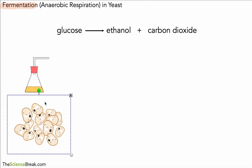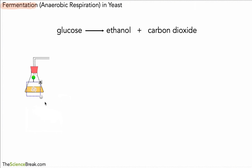So there's our yeast happily respiring away in our container, which is a conical flask, and this is producing two products. Those two products are ethanol and carbon dioxide. The carbon dioxide will leave through this tube, whereas the ethanol will be produced and stay inside the container.